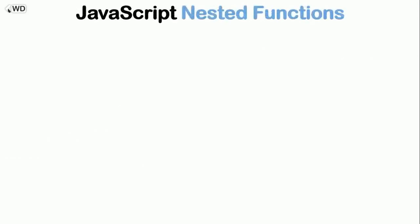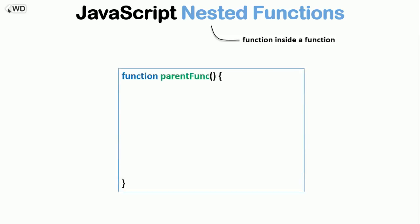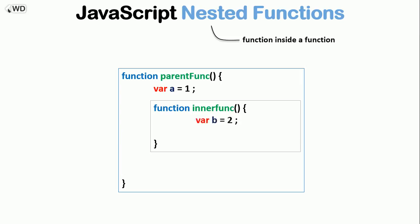Now let's talk about JavaScript nested functions. A nested function means we can create a function inside another function. Say I have a function called 'parentFunction' and inside it I created another function called 'innerFang' — this is a nested function. If I create a variable a equals 1 as a local variable for the parent, and a variable b equals 2 inside 'innerFang', then I add 'return a + b' — since a is in the outer scope, calling 'innerFang' will return 3.